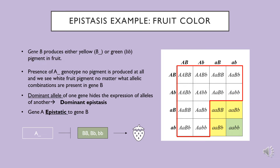One more feature worth noting in this example is the ratio of offspring phenotypes being observed. We are no longer getting the 9 to 3 to 3 to 1 ratio typical of a dihybrid cross in which genes are working independently. Instead, we see a 12 to 3 to 1 ratio across phenotypes, which is characteristic of dominant epistasis.